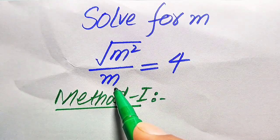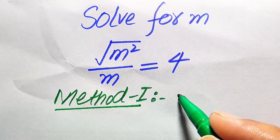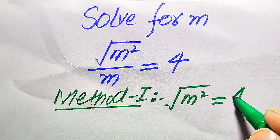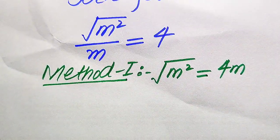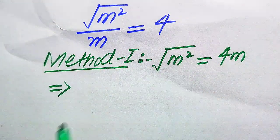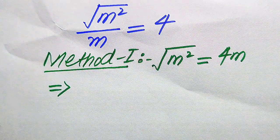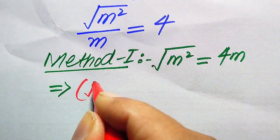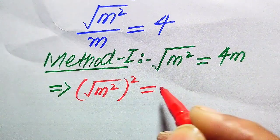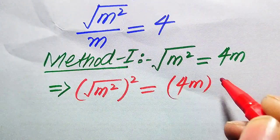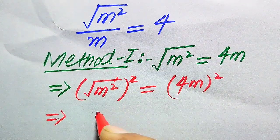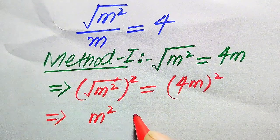In the first method, you see that m is dividing the left hand side — we need to move it to the right hand side, so it becomes: square root of m equals 4 times m. In the next step, we need to remove the square root sign by squaring both sides. When we square both sides, it is written as (√m)² = (4m)², and the square root and the square cancel, giving us m² = (4m)².